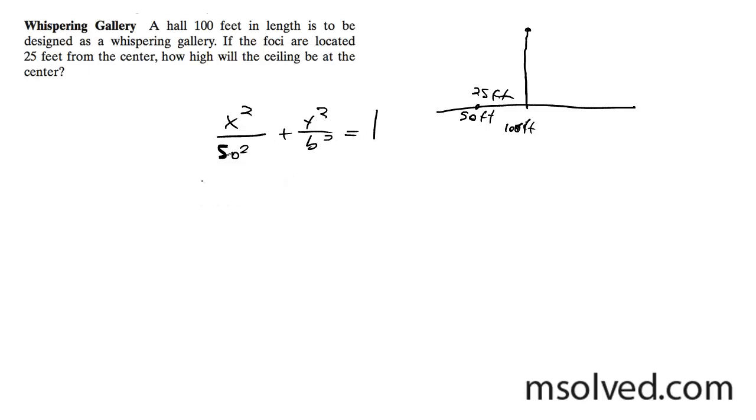And we know our foci is 25 squared, so to find the focus, it would be 50 squared minus b squared is equal to 25 squared. So then we get b squared is equal to negative 1875,